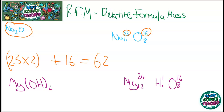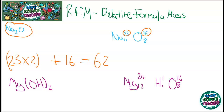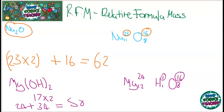We've also got an example of magnesium hydroxide. Magnesium hydroxide is a bit different because it has a bracket. What you need to do with a bracket is times everything inside the bracket by the number outside the bracket. For magnesium hydroxide, you have oxygen with a mass of 16 and hydrogen with a mass of 1. Inside that bracket it will be 17, and there are two of them, so that equals 34. Add it to 24 for the mass of magnesium, and that gives you 58 for the relative formula mass of magnesium hydroxide.